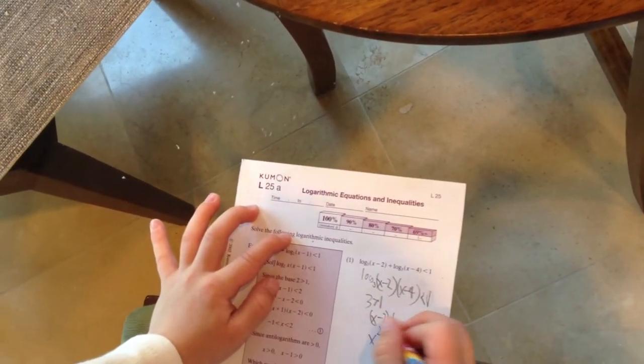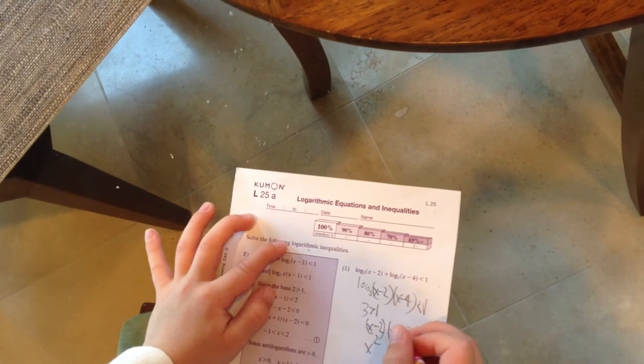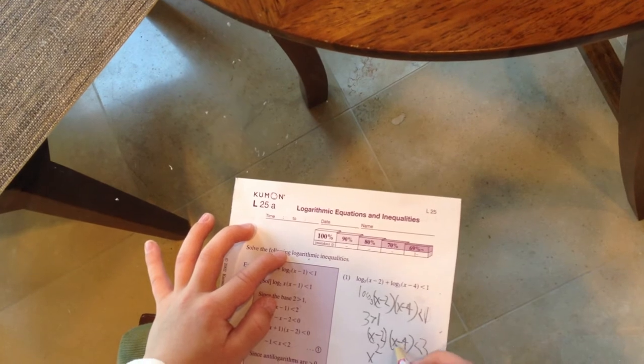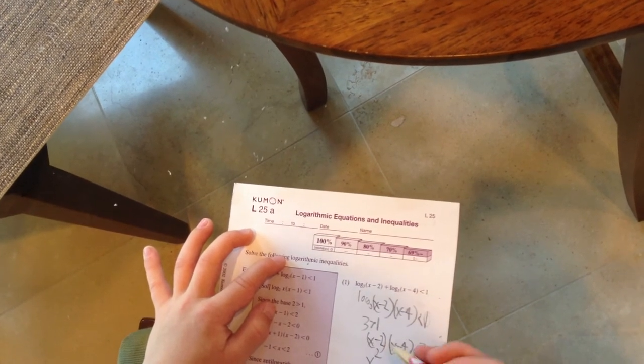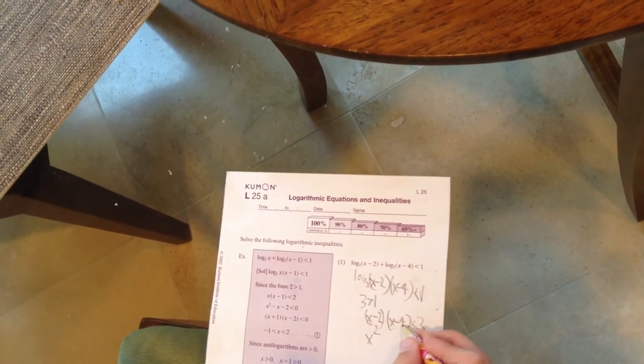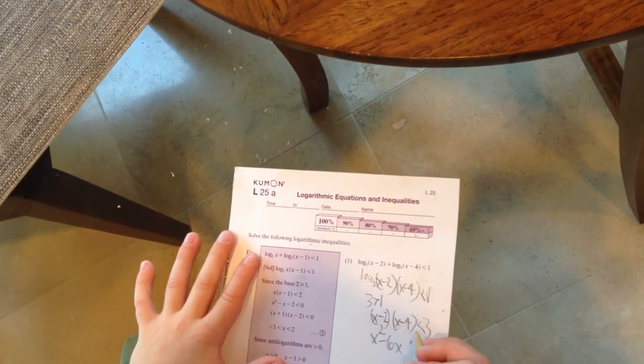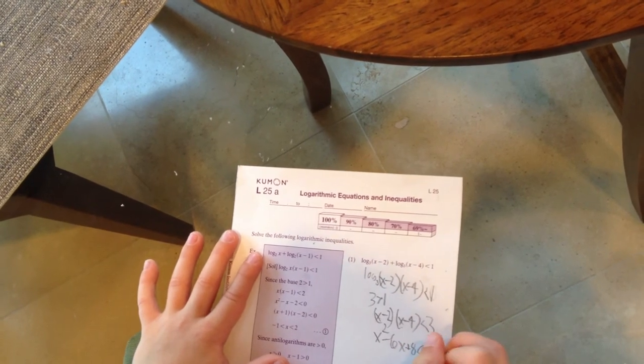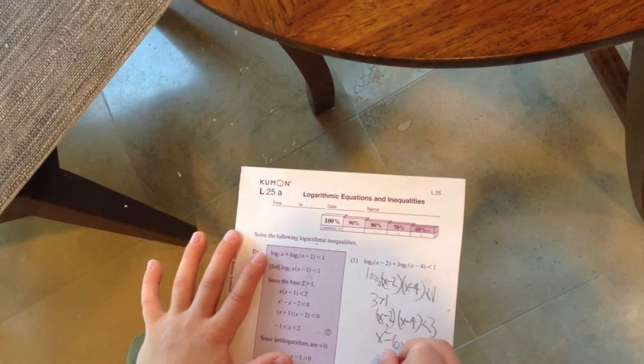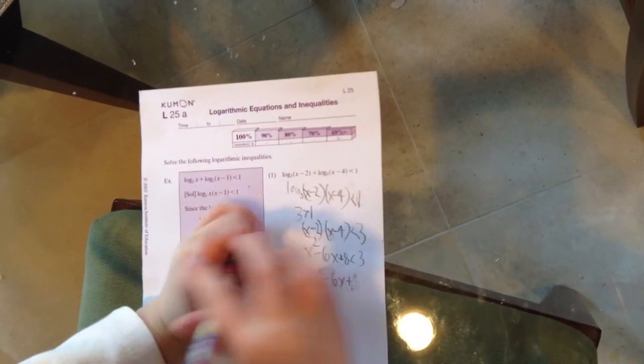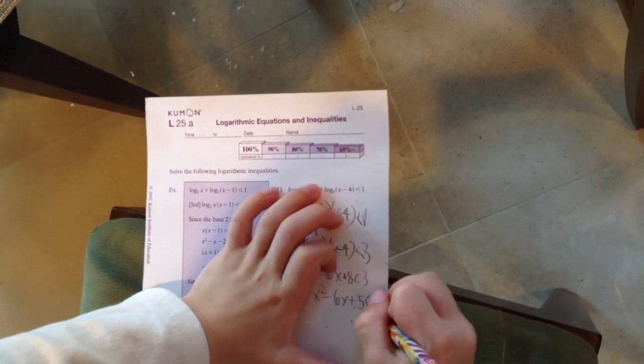And that means x squared - we're just multiplying this out - x times x, plus x times negative 4, plus negative 2 times x, plus negative 2 times 4. So x squared, and then negative 4x minus 2x is negative 6x, and then negative 2 times negative 4 is positive 8, which is less than 3. x squared minus 6x plus 8, 8 minus 3 is 5 - we just transpose the 3 - is less than 0.